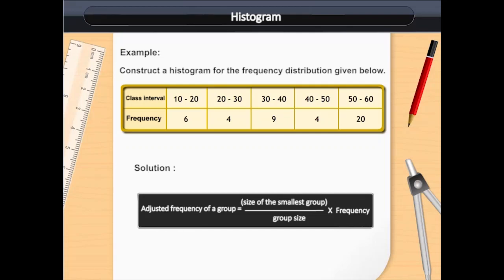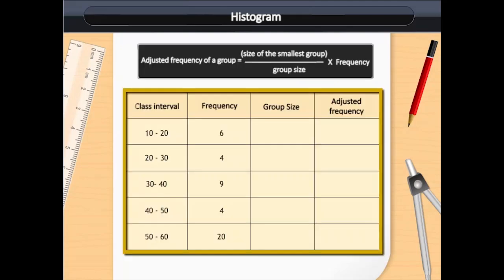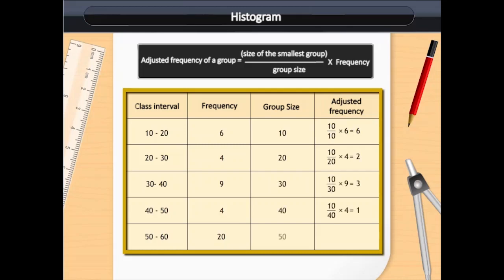The adjusted frequency of a group is equal to the size of the smallest group divided by the group size, multiplied by the frequency. Looking at the table: in the first column we have class intervals, in the second column we have frequency, in the third column we have group size, and in the last column we have the adjusted frequency. As shown in the animation, we can easily get the group size and the corresponding adjusted frequencies from the class intervals.